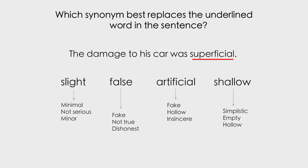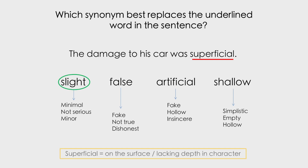False and artificial — if it's not true or it's fake, that suggests there isn't any damage to talk about, so why would there be a sentence about there being damage? And shallow could work, but it doesn't quite flow: 'the damage to his car was shallow' doesn't sound right. So we think it's probably the first one — the damage to his car was slight. So what do we think the meaning of superficial is? It's on the surface, or lacking in depth in character.